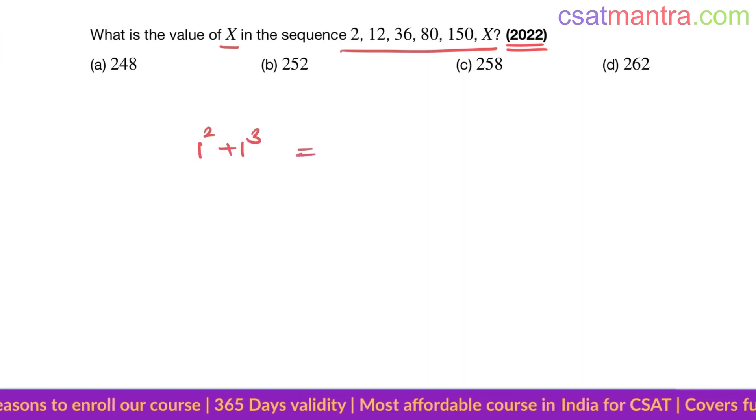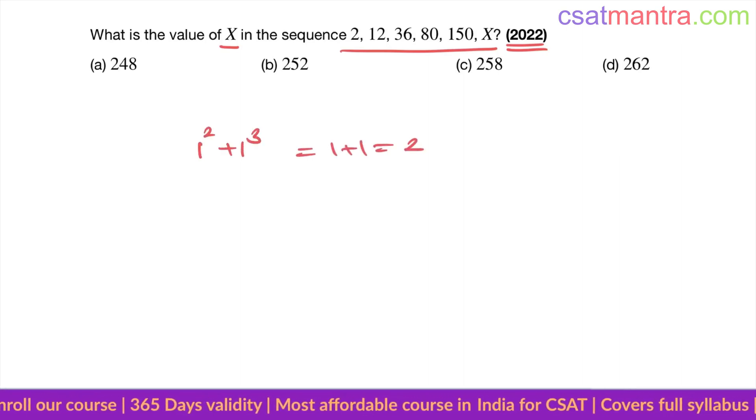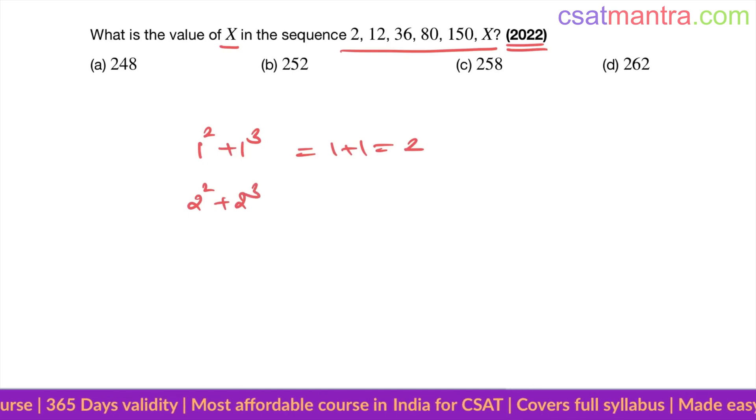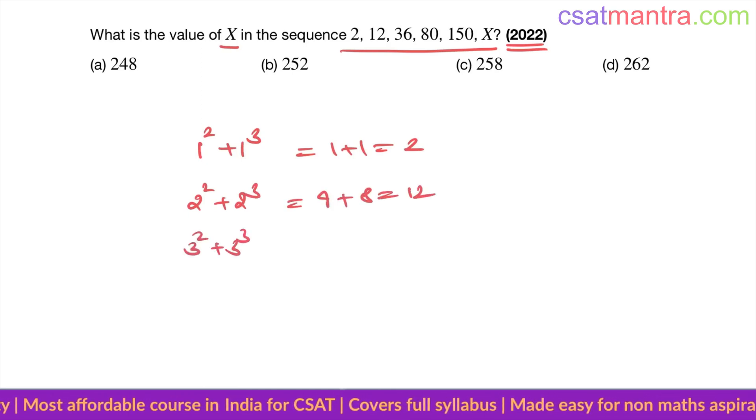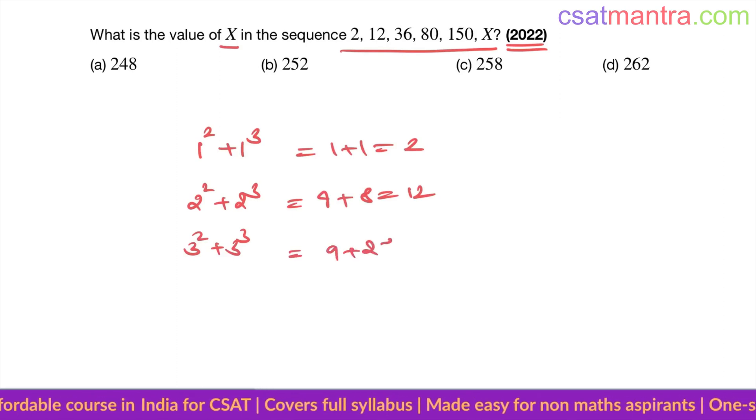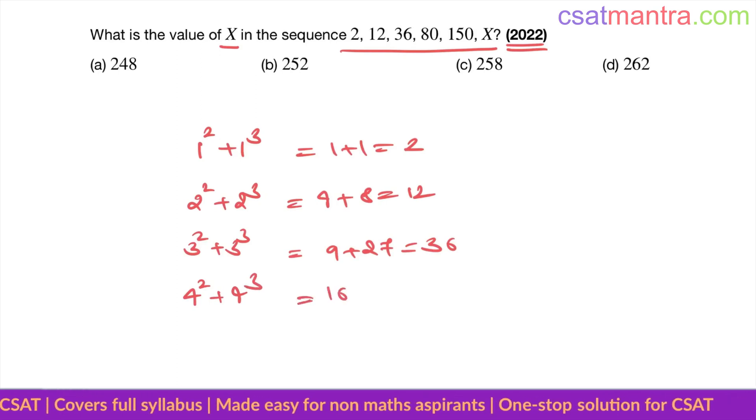1 squared plus 1 cubed, that is 1 plus 1, equals 2. 2 squared plus 2 cubed, 4 plus 8, equals 12. 3 squared plus 3 cubed, 9 plus 27, equals 36. 4 squared plus 4 cubed, 16 plus 64, equals 80.